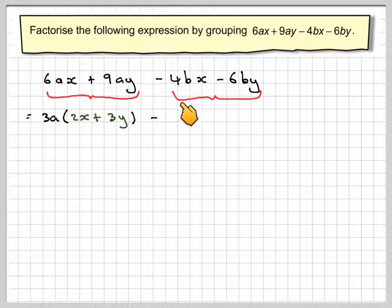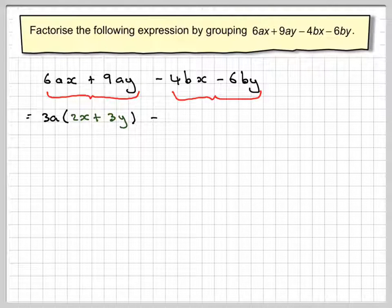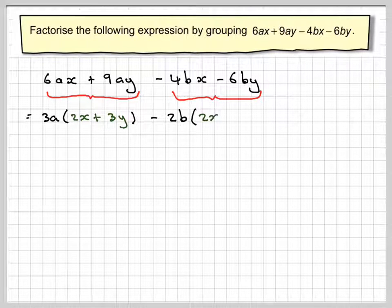Now, write down the minus sign and then group the next two terms together. What's common? Well, we've got a 4 and a 6. So, 2 comes out of there, and we've got a b as well. So, that will be 2b. Open up a bracket.